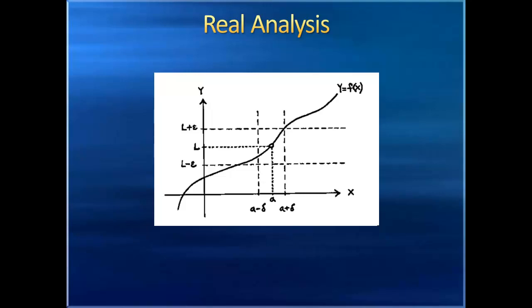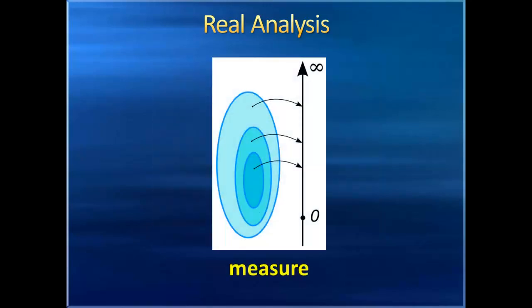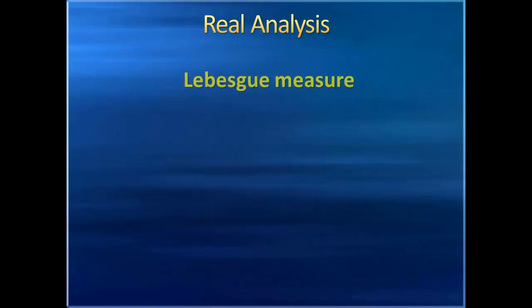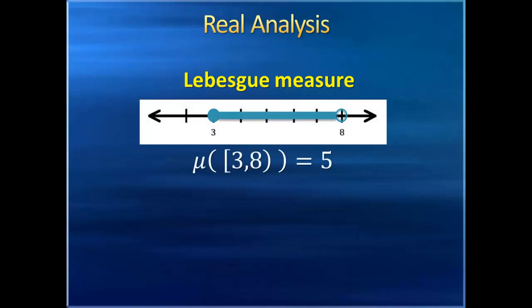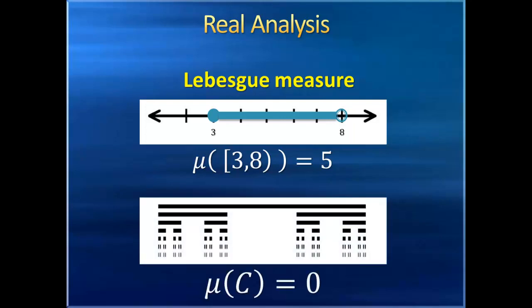Another new concept that's introduced in real analysis is the concept of a measure, which is a more formal and general way to define the concept of length, such as the length of an interval. For instance, the Lebesgue measure is what we call the conventional definition of length, area, and volume in Euclidean geometry. We would say the Lebesgue measure of the interval three to eight, including three, not including eight, is five. But we can use the Lebesgue measure to measure stranger sets, like the Cantor set, which has a measure of zero, despite having an uncountably infinite number of points, and even use this to expand what calculus can do.